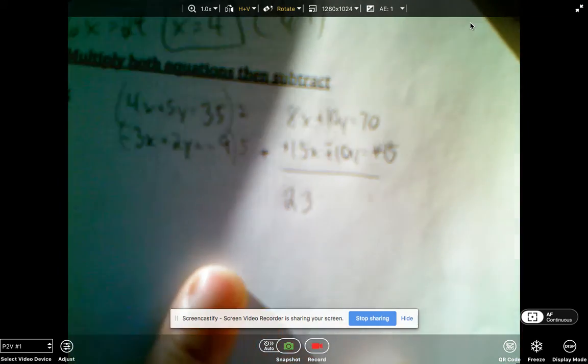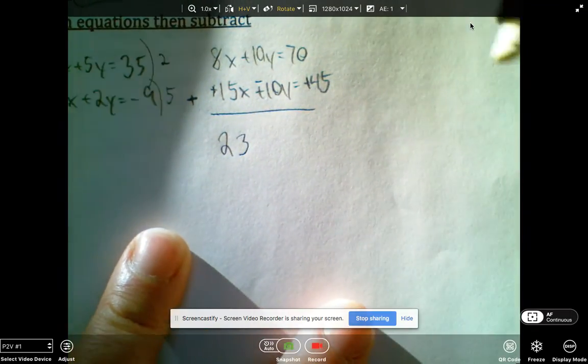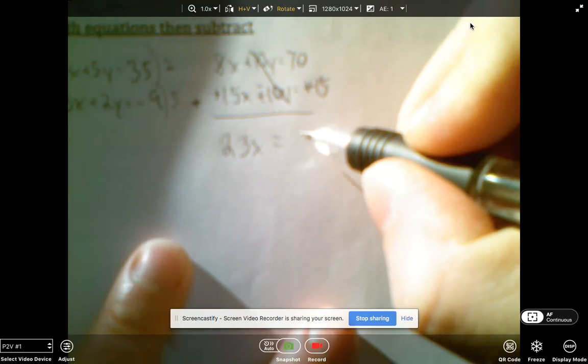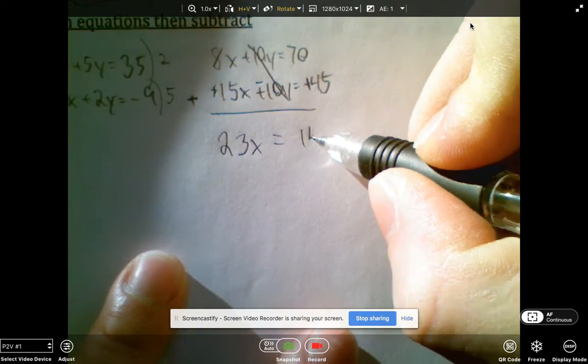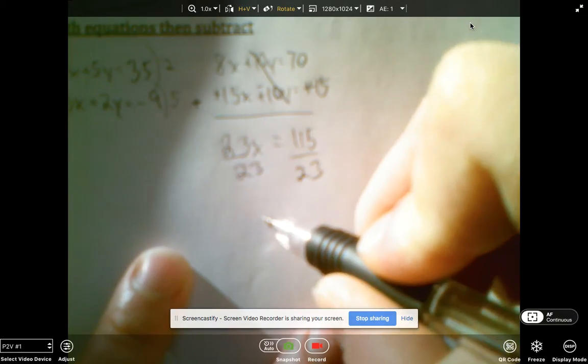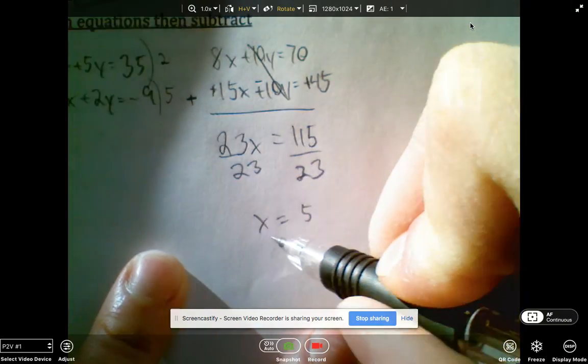That's going to give me here 23x. Sorry, the sun this morning is quite strong where I'm sitting. 23x, this eliminates equals 115. Divide each side by 23, and you're left with x equals 5.